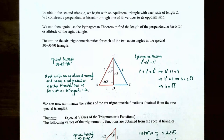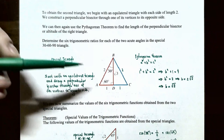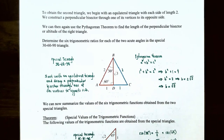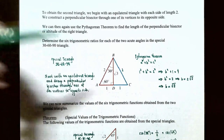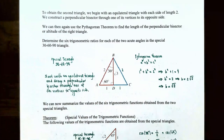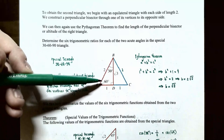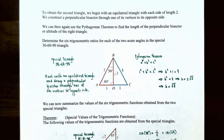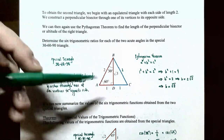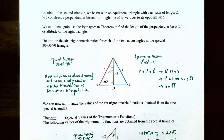In an equilateral triangle, all interior angles are 60°. When we cut angle B in half with the perpendicular bisector, we get a 30° angle, a 60° angle, and a 90° angle — hence the 30-60-90 triangle. The sides of this triangle are: √3 for the height, 1 for the base half, and 2 for the hypotenuse.